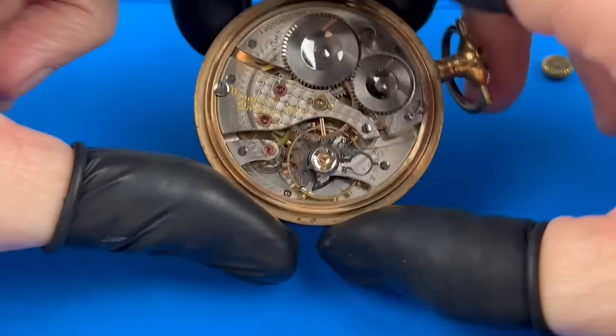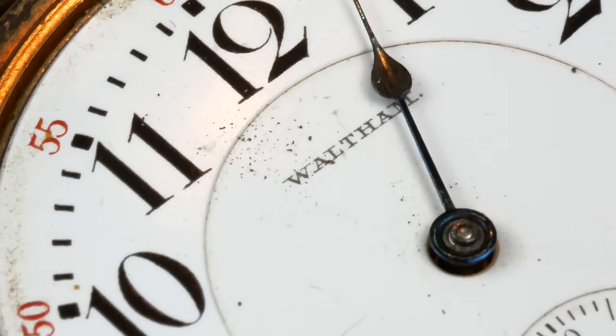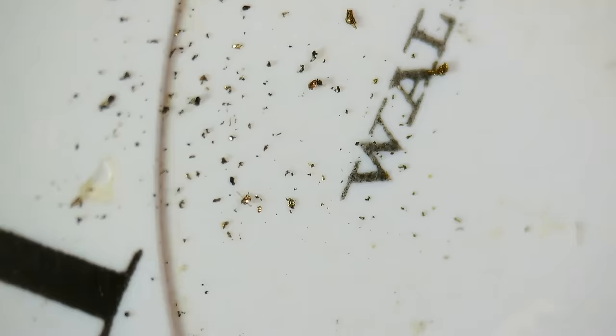Under the hood is the iconic Waltham Vanguard, a 23-jewel railroad-grade movement originally adjusted to five positions. As I restore any watch, I try to listen closely to the stories it can tell, where it's been, and how it may have served the person who carried it.